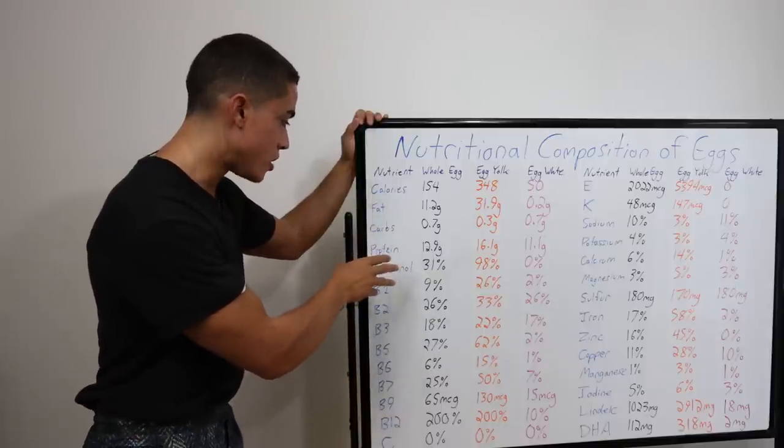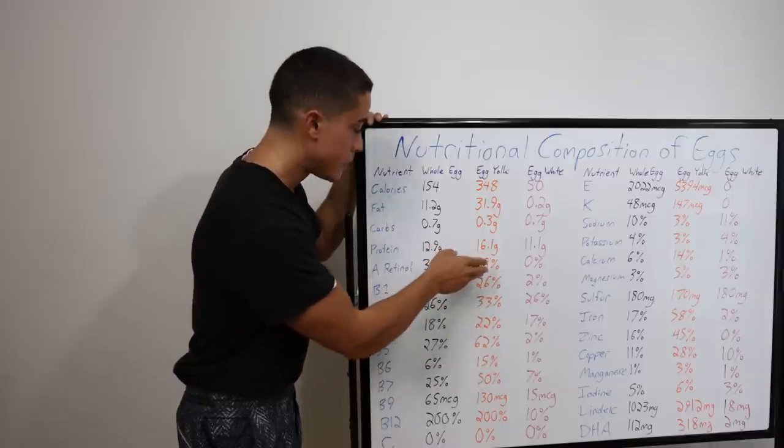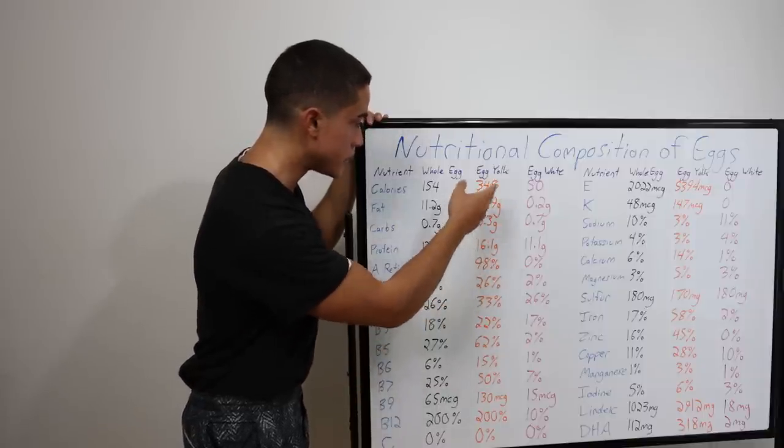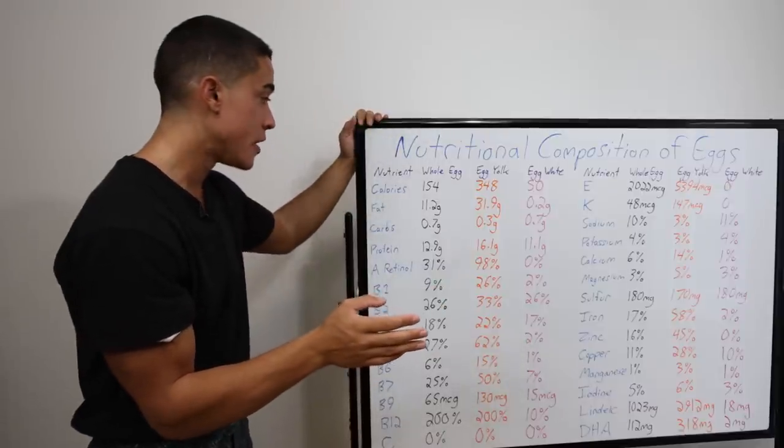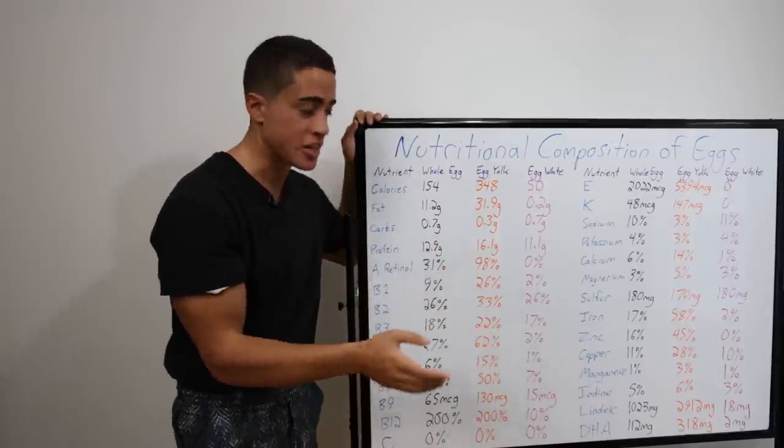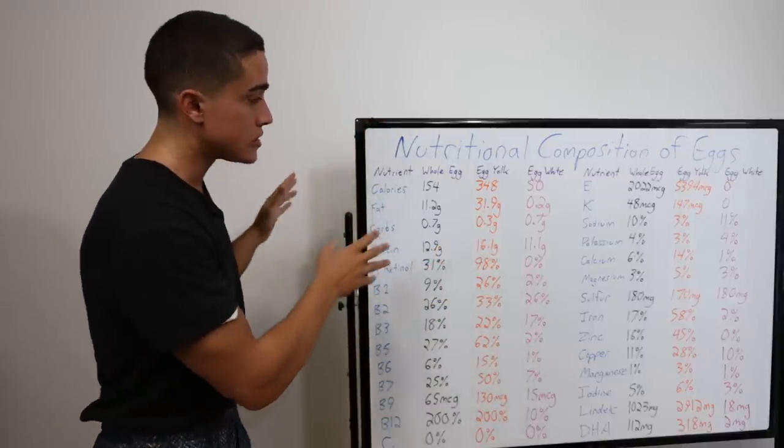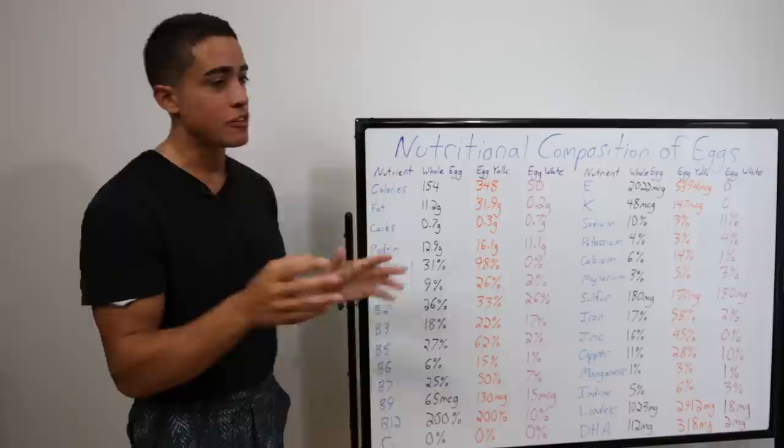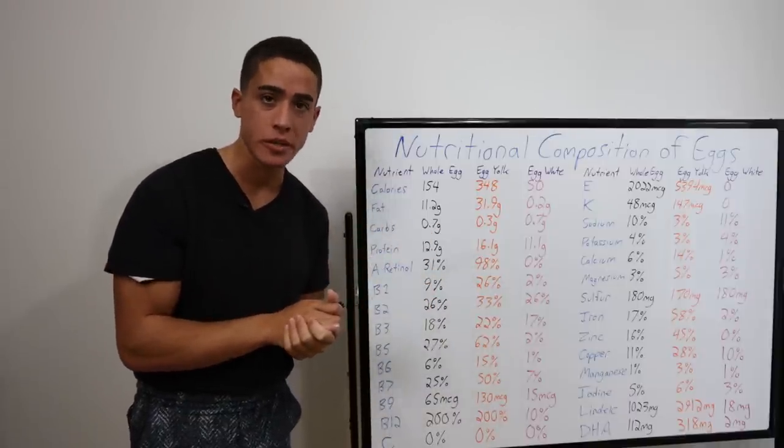So vitamin A, retinol, it's pretty high. One egg is already 31%. Egg yolks, this is probably two or three egg yolks, is 100% of your vitamin A. And egg whites measure at 0%. I'm not sure if that 0% is actually accurate. But what this is telling us is that if you're going to eat a lot of eggs that day, you really need to be out in the sun the whole day, basically.